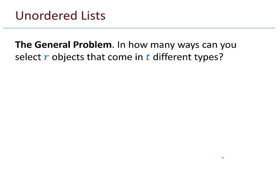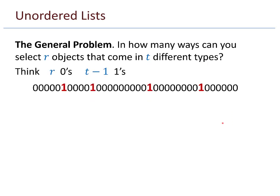The general problem. In how many ways can you select r objects that come in t different types? So like 10 pieces of fruit that come in three different types. We think about there being r zeros and t minus 1 ones. So remember when you're placing the ones, that the number of ones has to be one less than the number of types. Because the ones act as dividers.